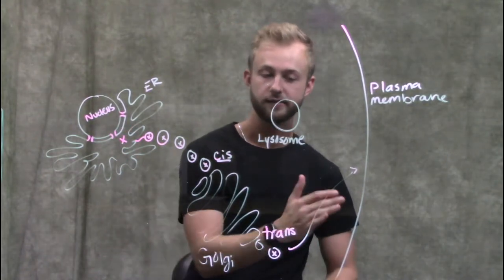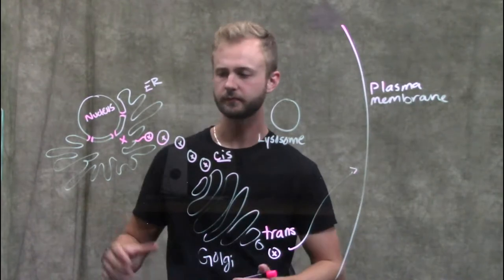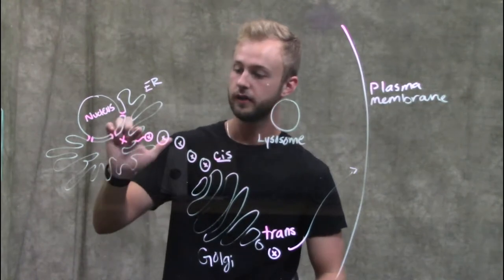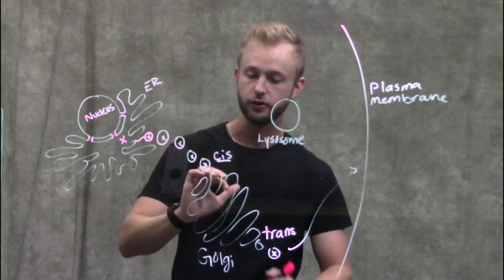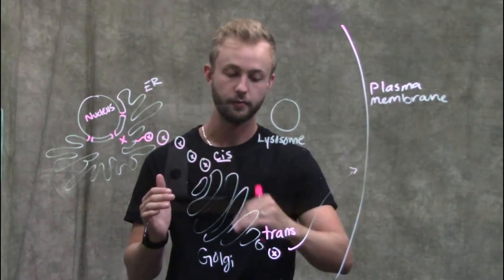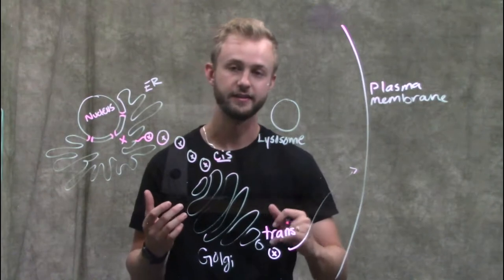With this example we can see this continuity between these different cellular compartments that's taking place. They're connected by vesicles in this case. After it breaks off from the ER it goes to the Golgi body and then back to the plasma membrane all in the form of vesicles.